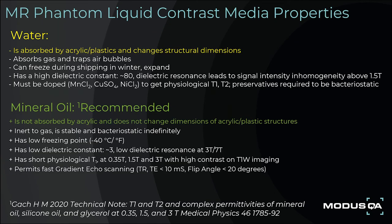All MRGRT QA distortion phantoms contain a liquid contrast media and a plastic that envelops the phantom. Common materials include water and mineral oil. However, it is noted that water is absorbed by acrylic and plastics and can change structural dimensions. It has some negative attributes in that it can freeze during shipping, has a high dielectric constant of about 80, which leads to signal intensity inhomogeneity above 1.5 T and is not suitable as a phantom contrast medium at 3 Tesla. It also must be doped with metallic salts to get physiological T1 and T2, and does require preservatives to become bacteriostatic.